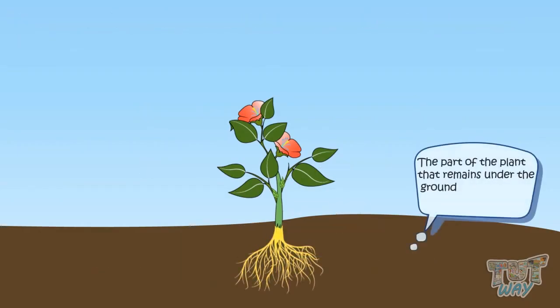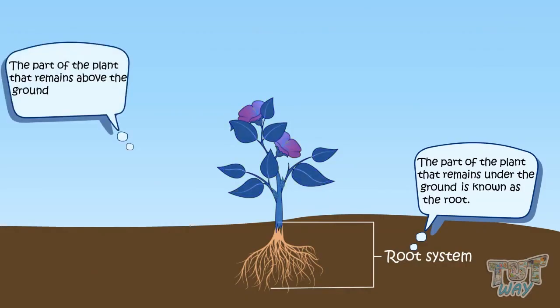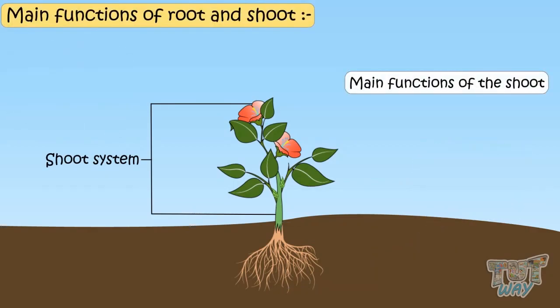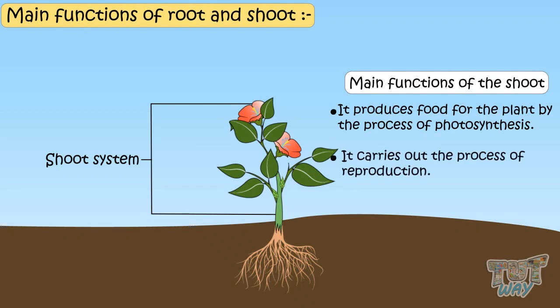The part of the plant that remains under the ground is known as the root. The part of the plant that remains above the ground is known as the shoot. The main function of shoot is to produce food for the plant by process of photosynthesis and it carries out the process of reproduction too.